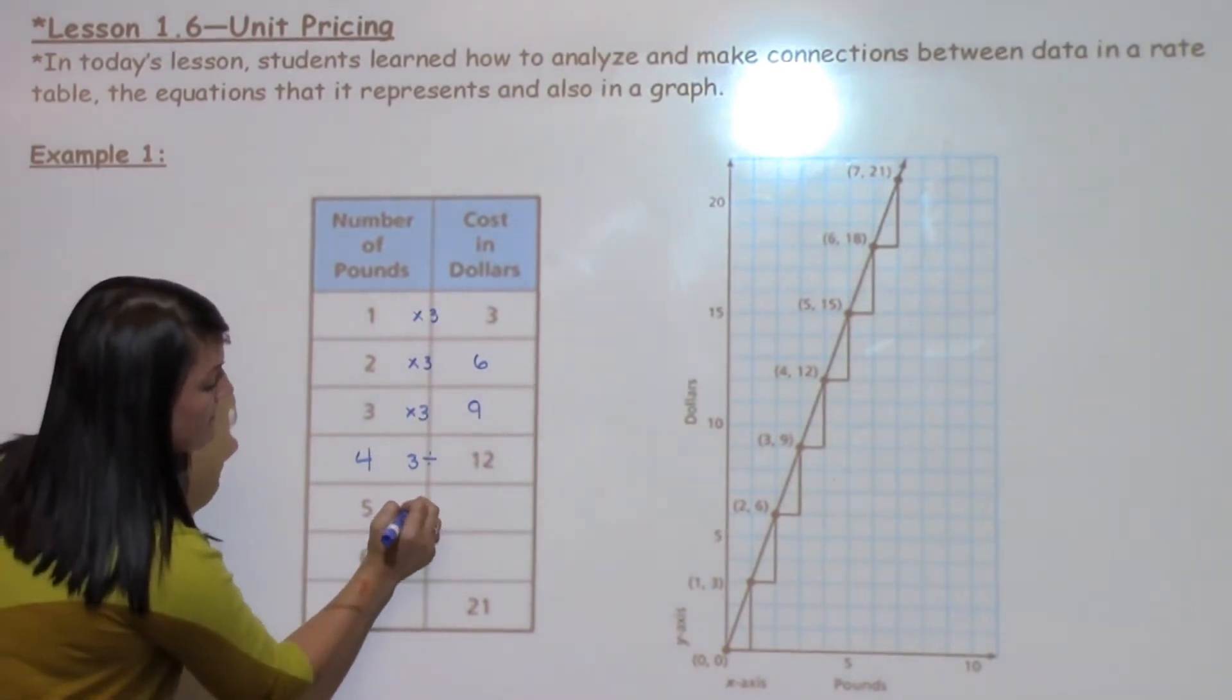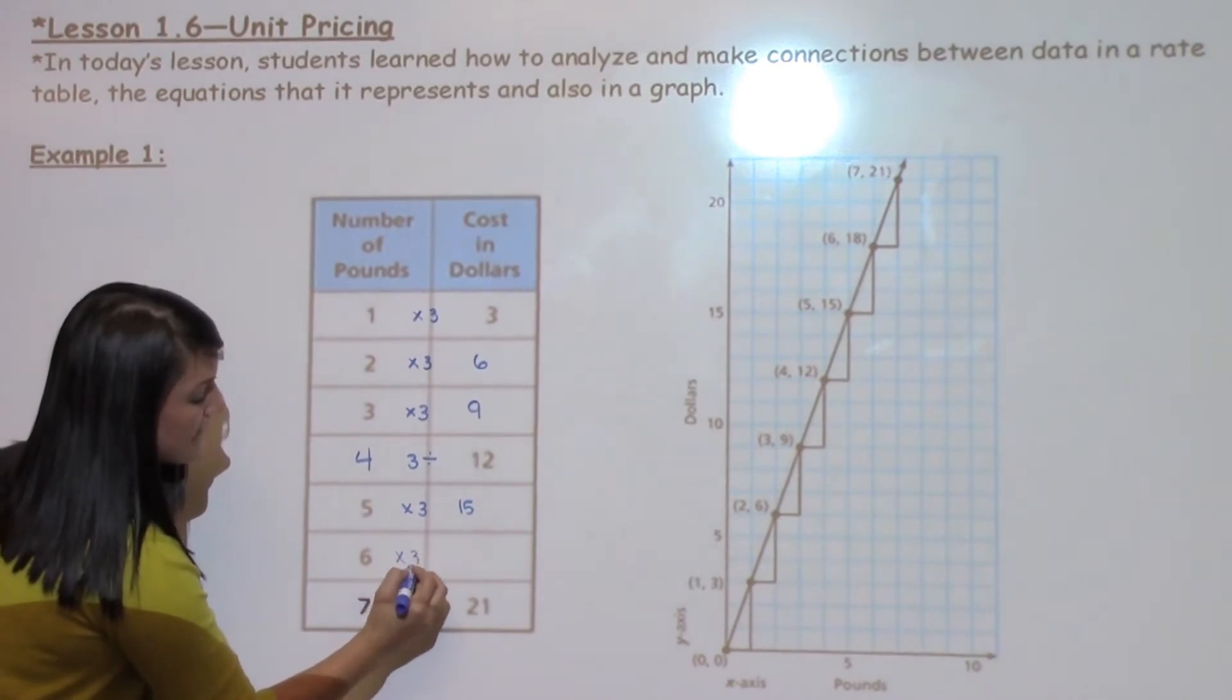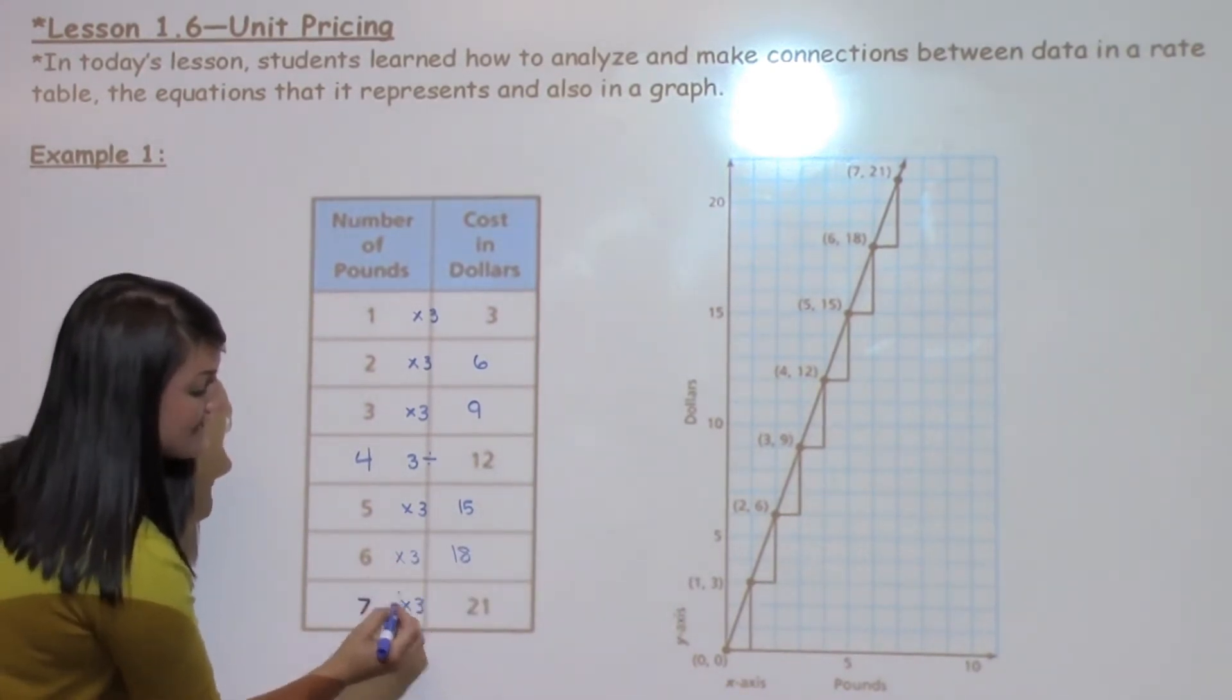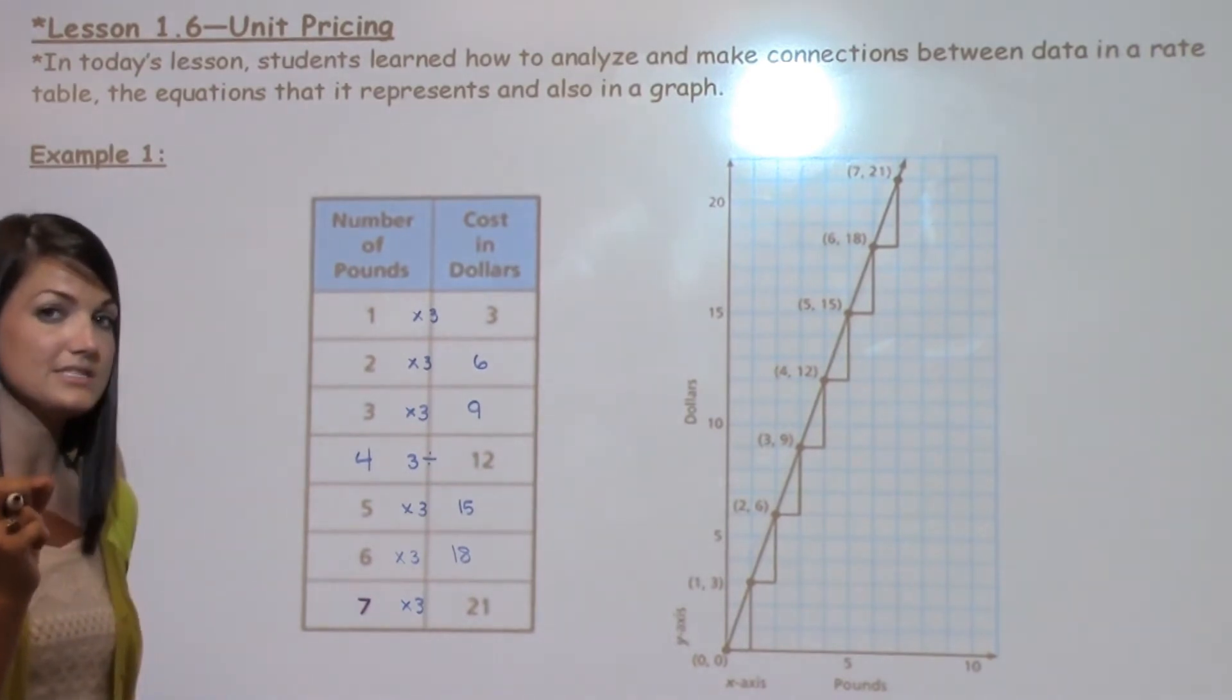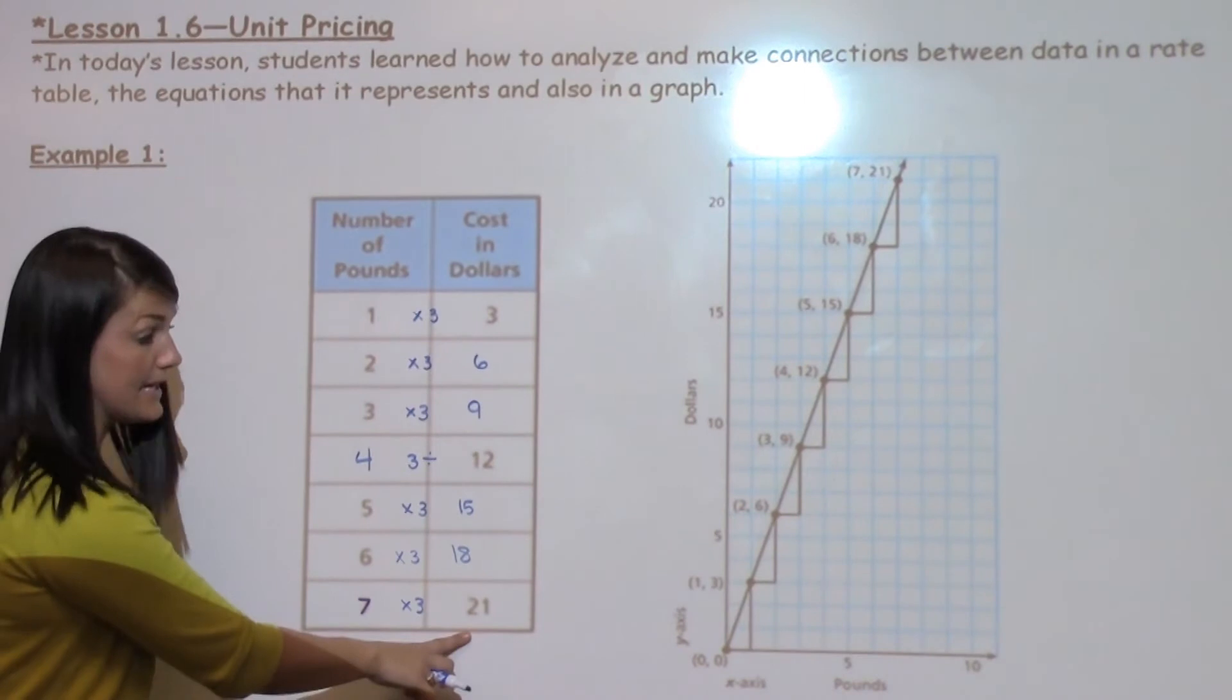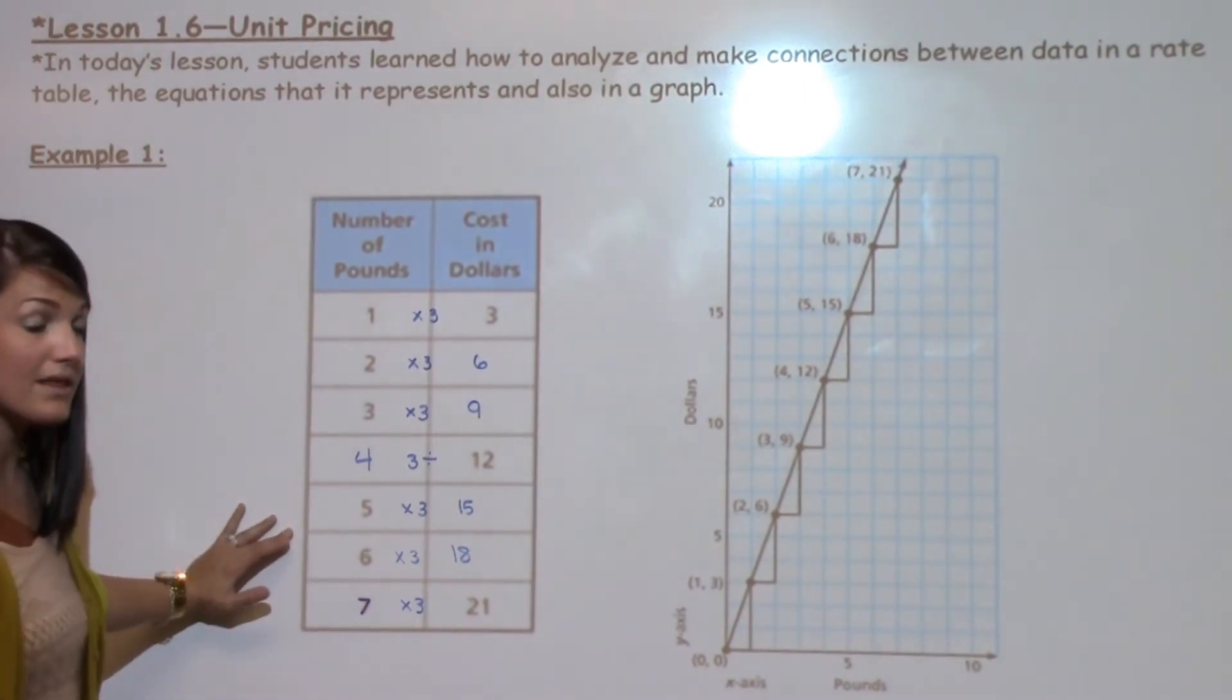I keep moving on. Five times three would give me 15. Six times three would give me 18. And I have seven and 21, but I still want to make sure and check that the constant rate applies to the bottom of the table. And it definitely should, and it does. Seven times three is 21. So now that we have our rate table completely filled out,